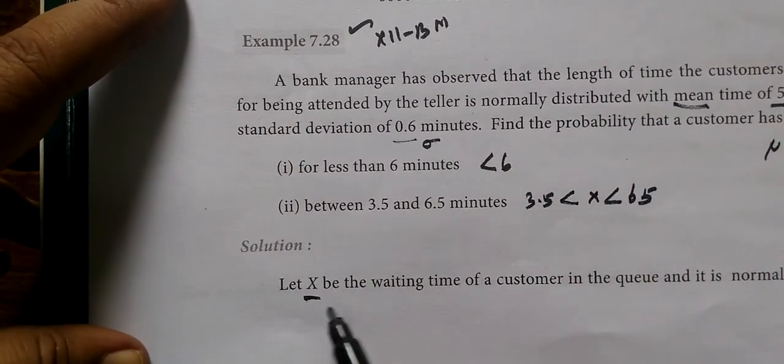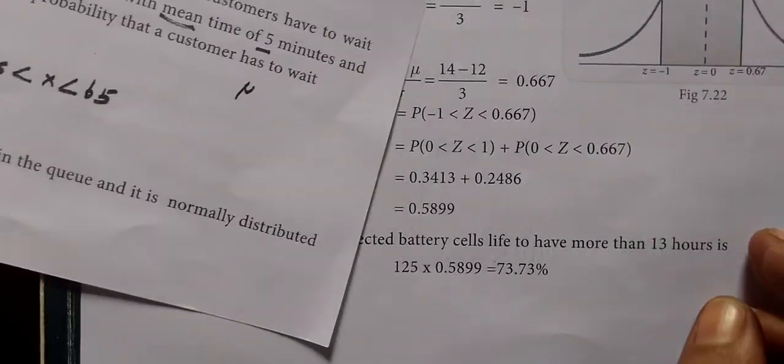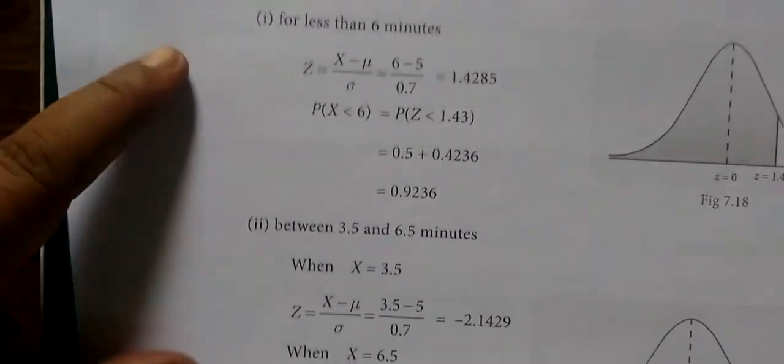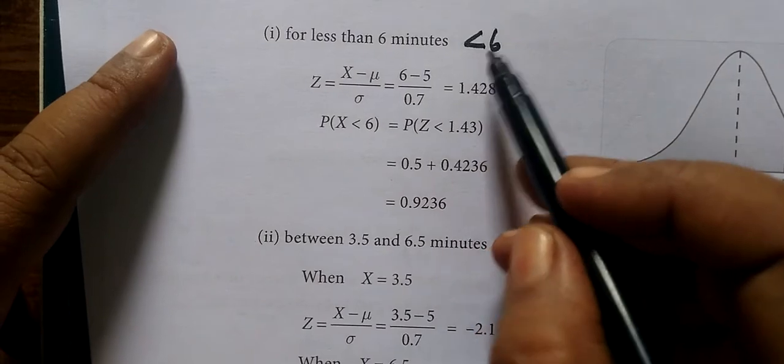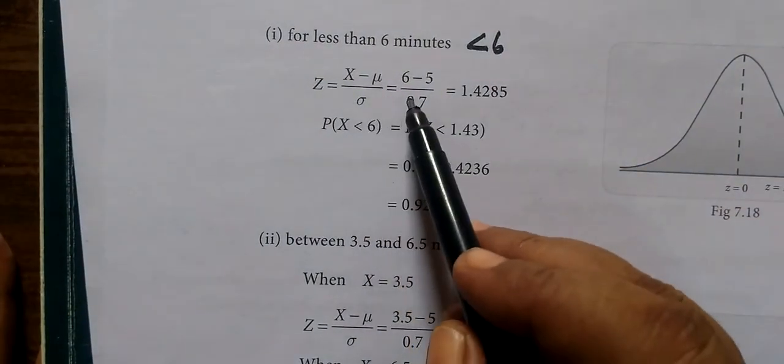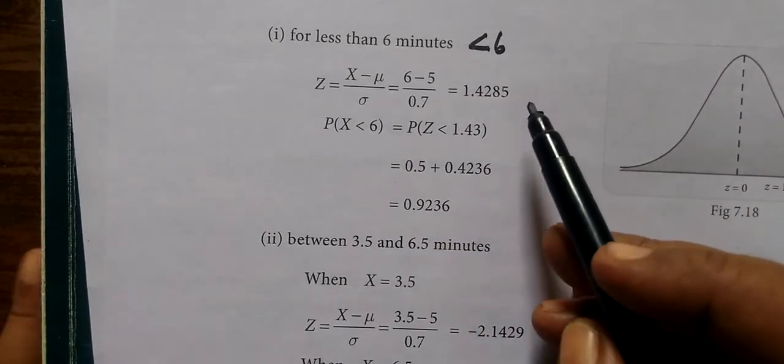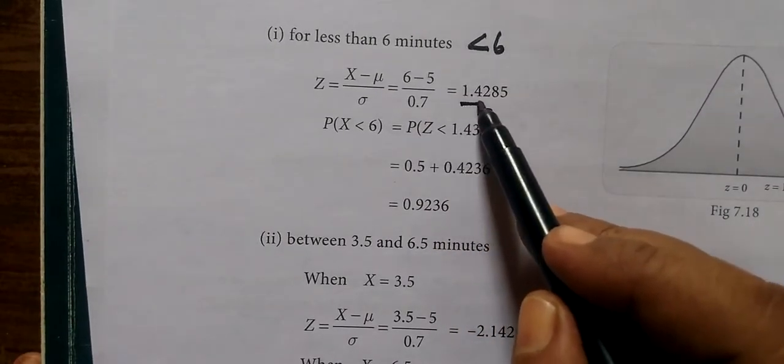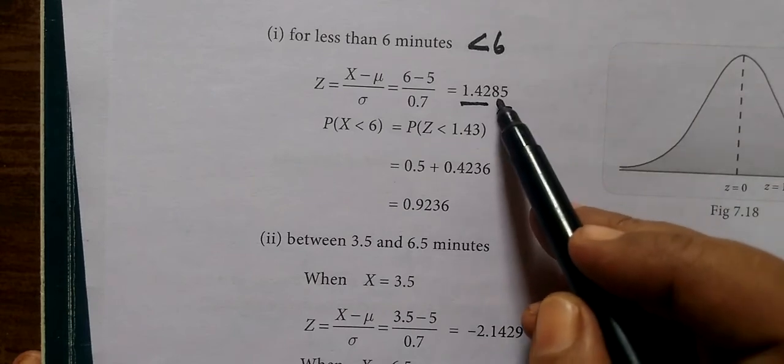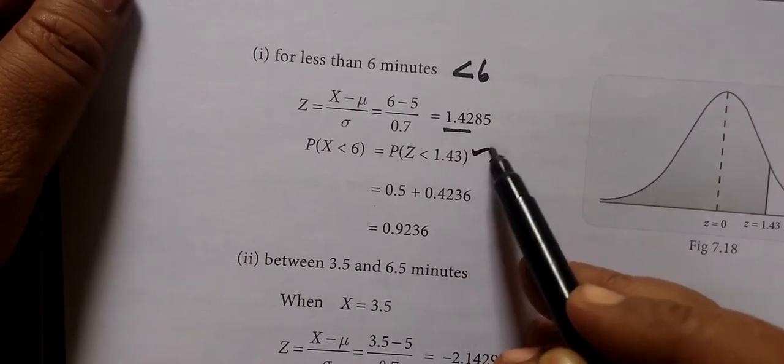Let's say the waiting time of customers is normally distributed. First we have less than 6 minutes. Now we have Z = (X - μ) / σ. The usual procedure gives us 1.4285. Now we have 3 digits, and 8 is more than 5, so we add 1. This gives us 1.43.